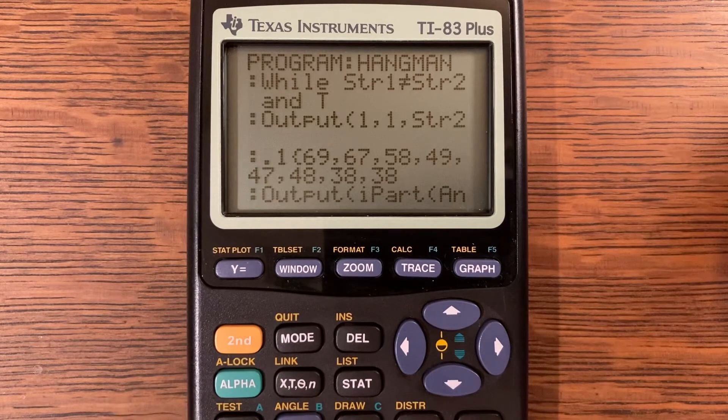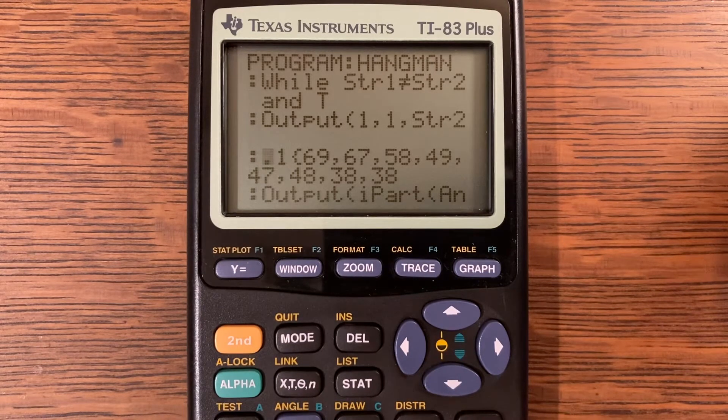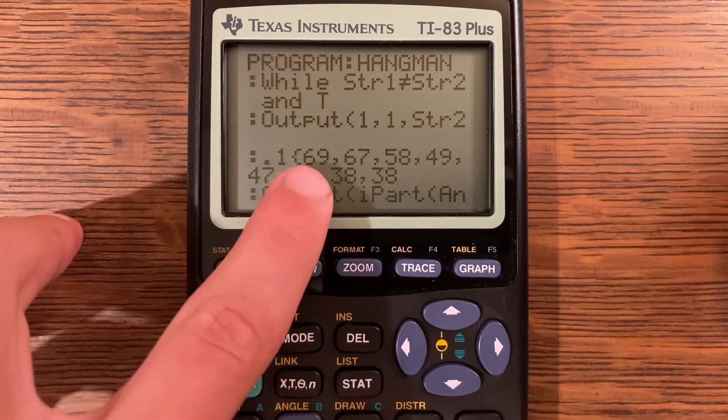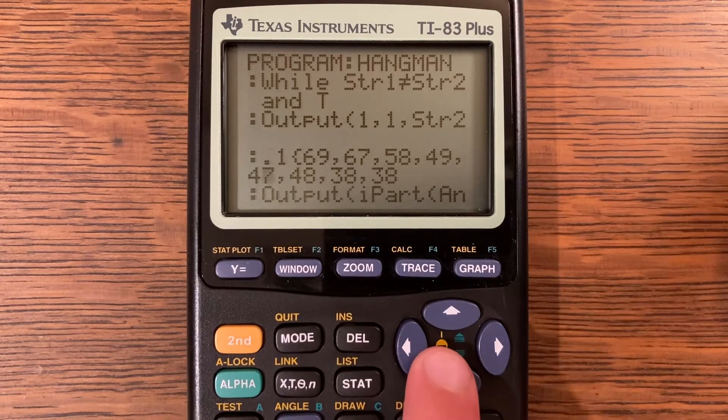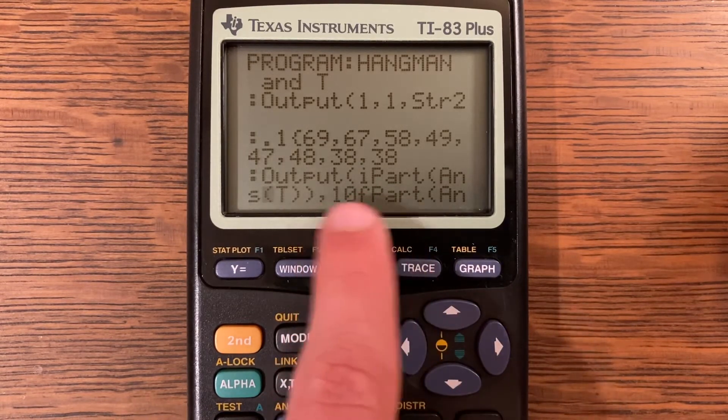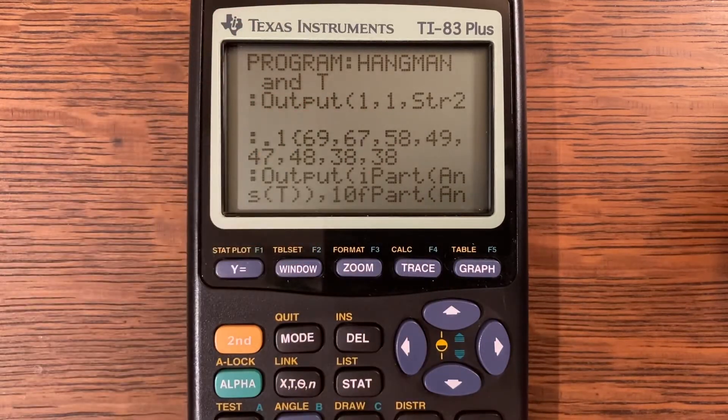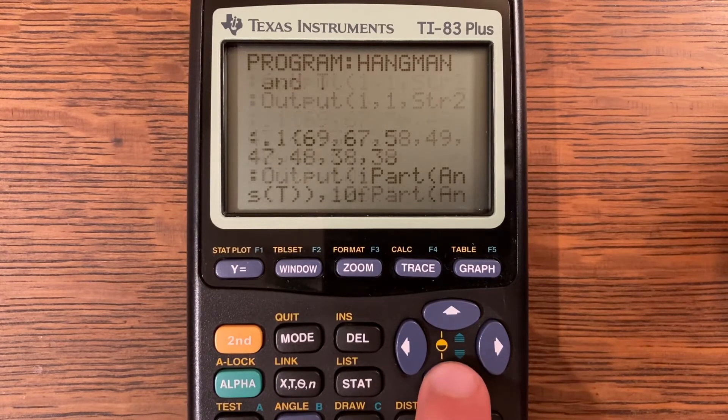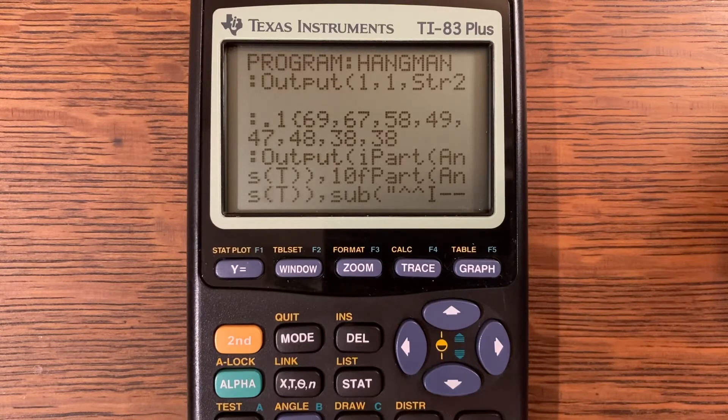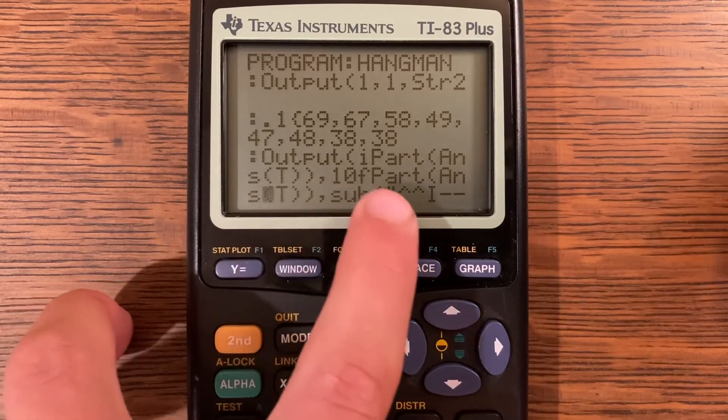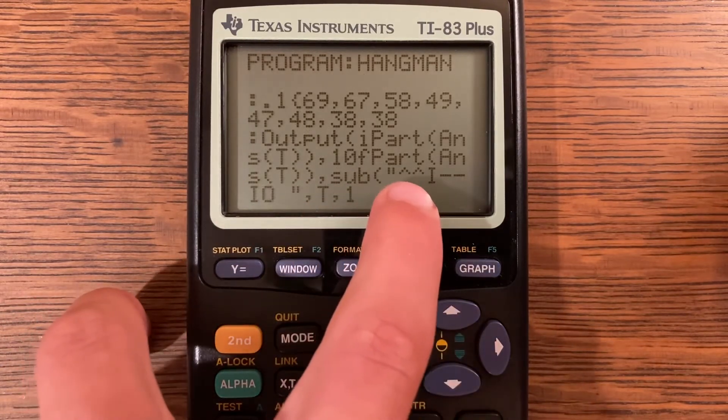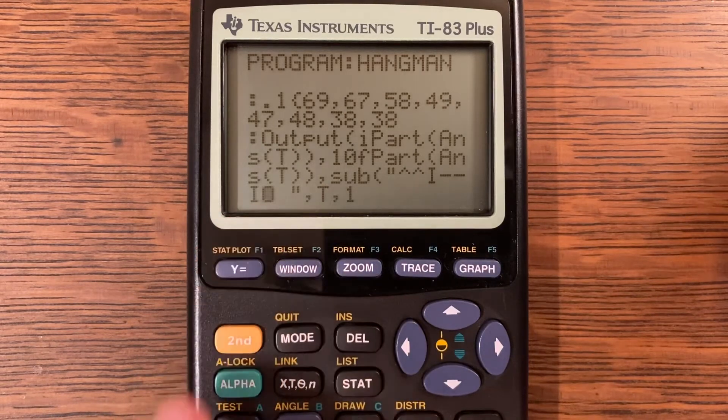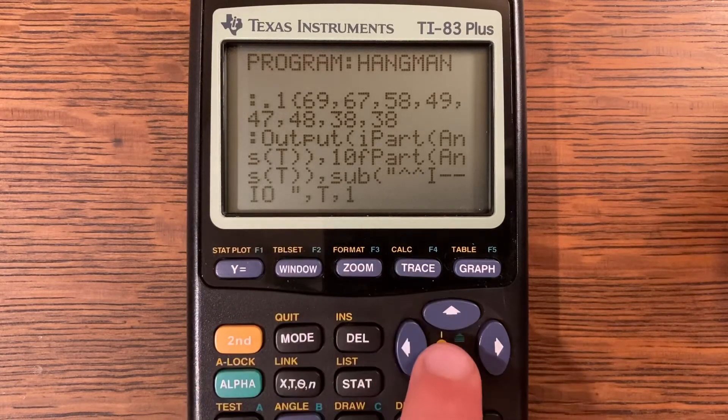You have point one and then a fancy bracket 69 comma 67 comma 58 comma 49 comma 47 comma 48 comma 38 comma 38. What this basically means is 0.1 times 69 would give you 6.9, and then what it's doing here is it's outputting at the i part and the f part or 10 times the f part, which would give you 6 comma 9. That would put it where it is on the screen, and that's what it does for all of this. It's actually a really ingenious method to do it. Output at i part of answer at t comma 10 part of answer at t comma sub quote the two up arrows or carets as many math teachers call them, an i two minuses the i capital i here and also a o quote, and there is a space there at the end, comma t comma 1.